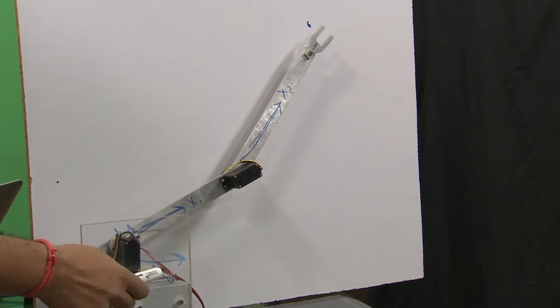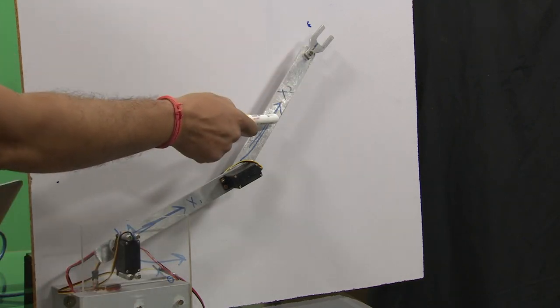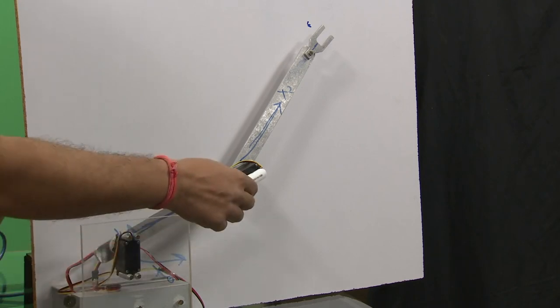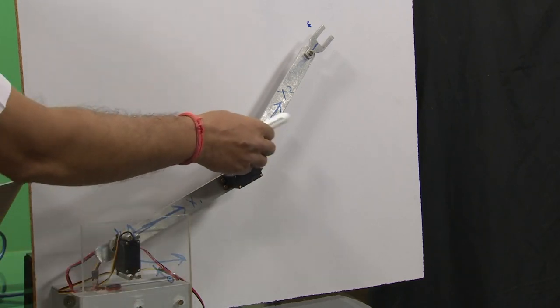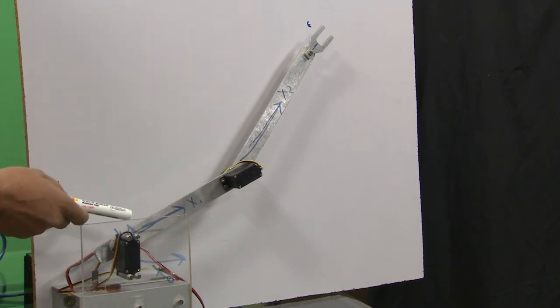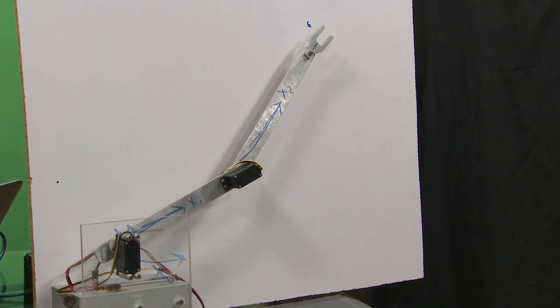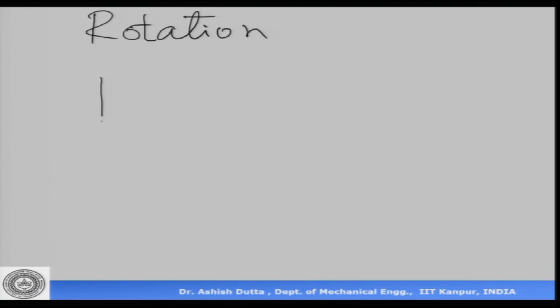The difference between frame 0 and frame 2 or 3 is that the frame has translated — the origin has moved from here to here — and there is also an angle between x2 and x0. So this frame has both an angle and a translation distance with respect to the base frame. Frame 1 has only an angle with respect to frame 0. This shows we need two transformations: the rotation transformation and the rotation-plus-translation transformation.